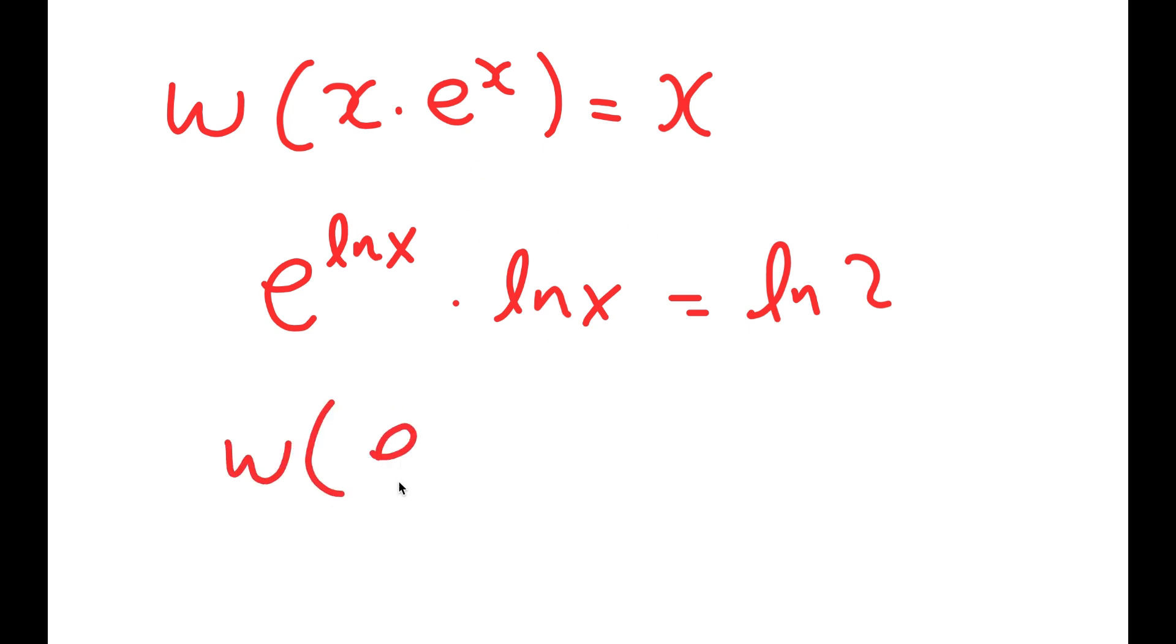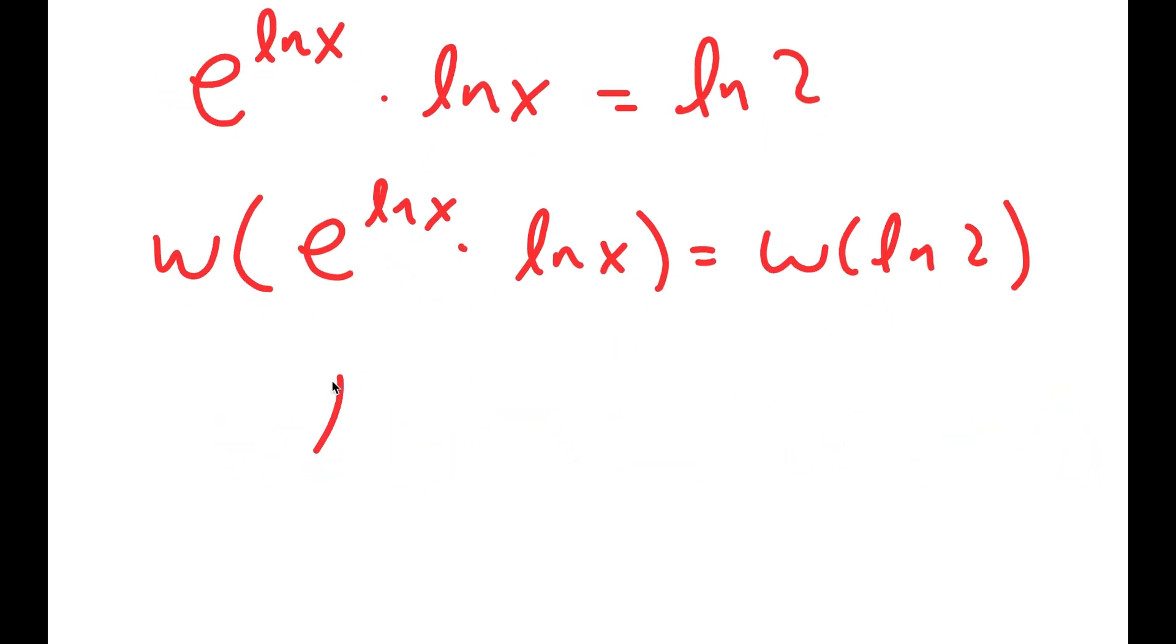And now I can use the Lambert W function on both sides. So I get W of e to the power of ln x times ln x is equal to W of ln 2. And now, I'm left with ln x is equal to W of ln 2.